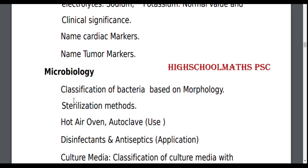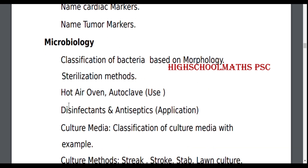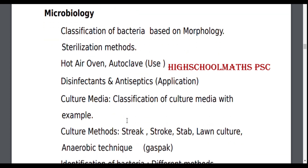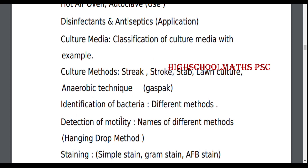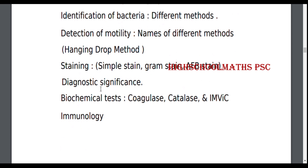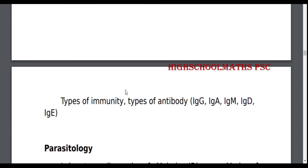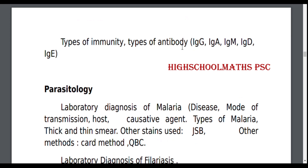Part 1 Microbiology: Classification of Bacteria based on Morphology, Sterilization Methods (Hot Air Oven, Autoclave), Disinfectants and Antiseptics. Culture Media — Classification of Culture Media with Examples. Culture Methods: Streaks, Strokes, Stab, Liquid Culture, Anaerobic Technique. Identification of Bacteria, Detection of Motility, Staining, Diagnostic Significance, Biochemical Test. Types of Immunity, Types of Antibody.